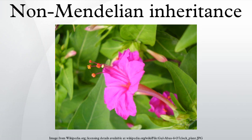Mosaicism also results from a phenomenon known as X inactivation. All female mammals have two X chromosomes. To prevent lethal gene dosage problems, one of these chromosomes is inactivated following fertilization. This process occurs randomly for all of the cells in the organism's body. Because a given female's two X chromosomes will almost certainly differ in a specific pattern of alleles, this will result in differing cell phenotypes depending on which chromosome is silenced. Calico cats, which are almost all female, demonstrate one of the most commonly observed manifestations of this process.